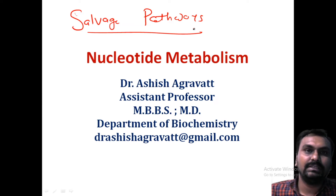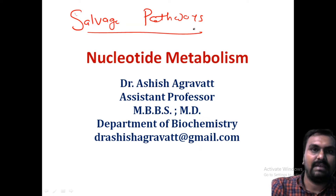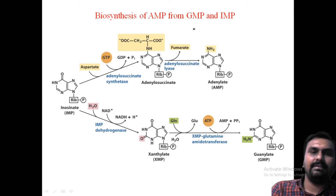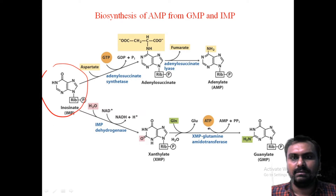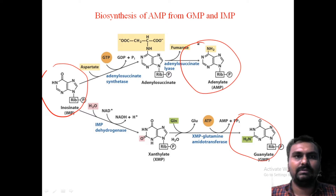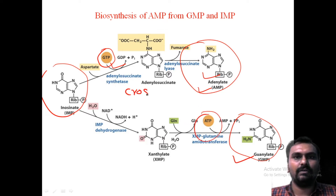As we know, de-novo synthesis of purines and pyrimidines are energy-consuming processes. By this salvage pathway, our body economizes the cellular energy expenditure. In my last lecture, we have seen that from IMP, GMP and AMP are synthesized. For the synthesis of AMP, GTP is required, and for the synthesis of GMP, ATP is required. That is called cross regulation.